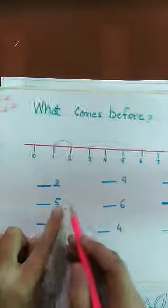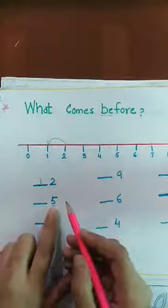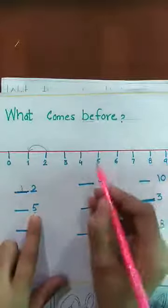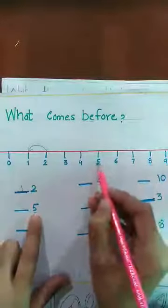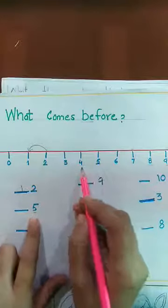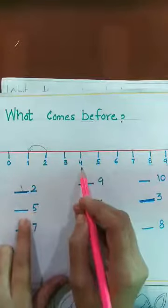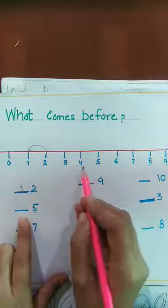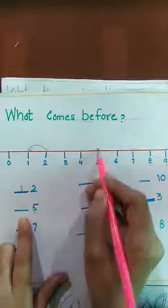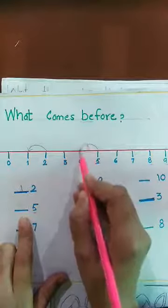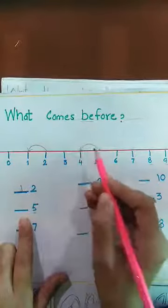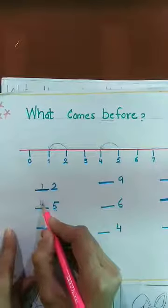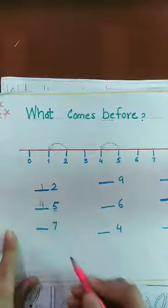Now this is five. Ab humne is number chart mein dekhna hai — where is five? And what comes before five? Four. What comes before five? Four. Means five se pehle koun sa number hai? Before number kaun sa hai? Toh yahan pe humne kya likh diya? Four.